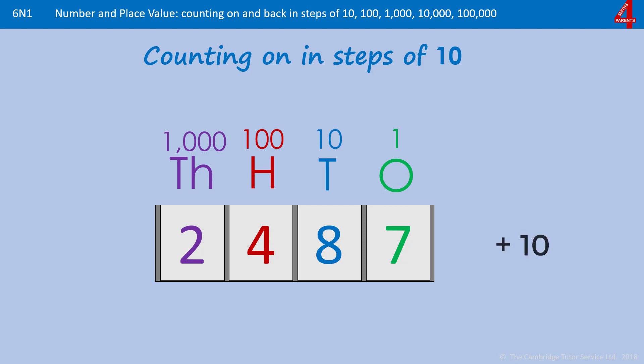If we're adding on 10, just the digit in the tens column will change. The ones column will never change when we're just adding on multiples of 10. The hundreds will change only when we get to a certain number which I'll demonstrate here.